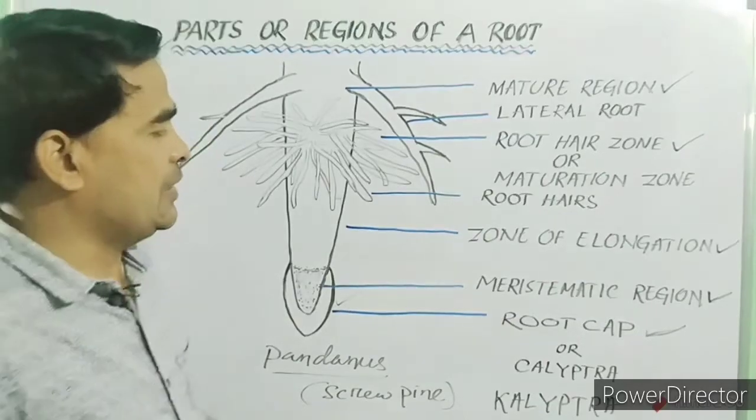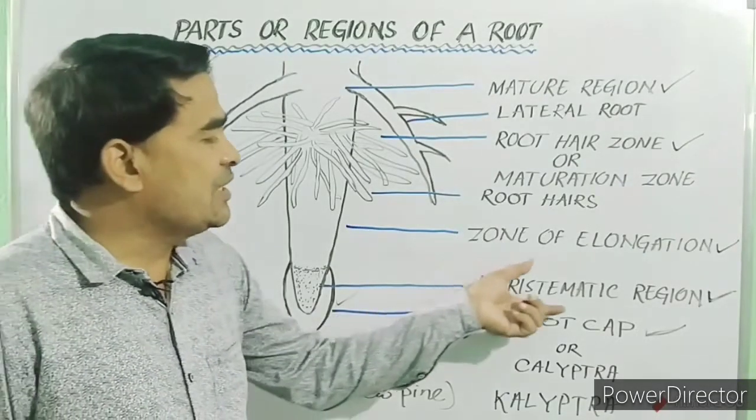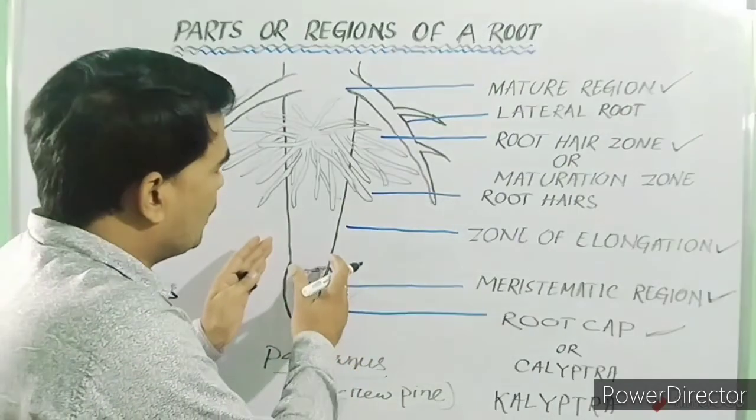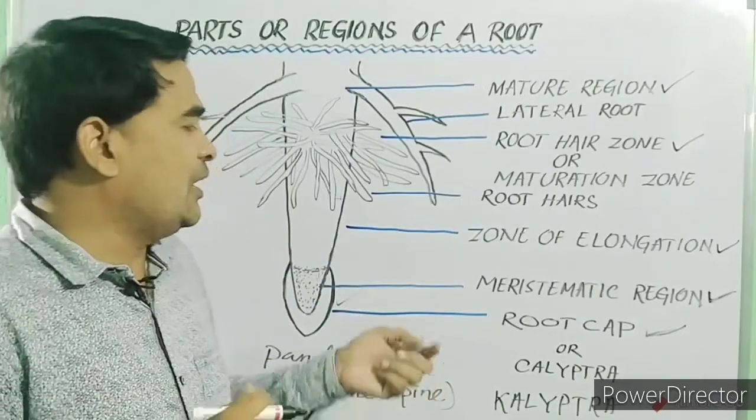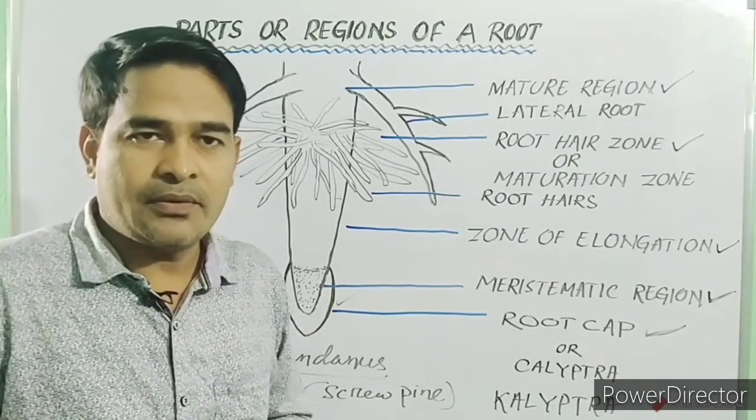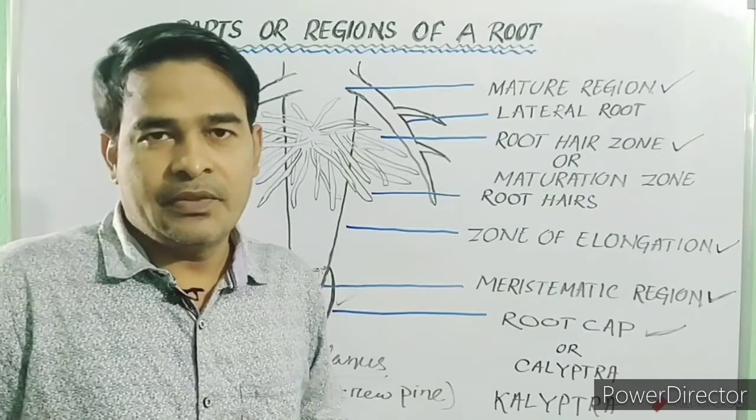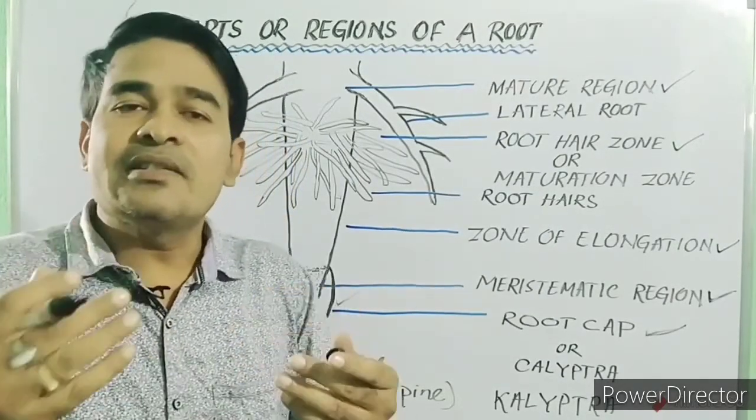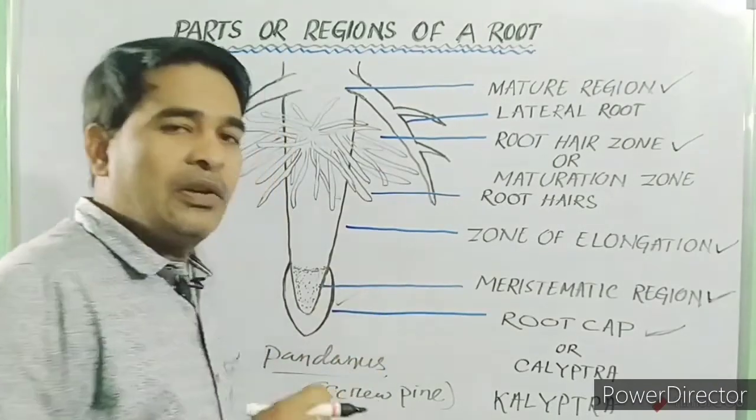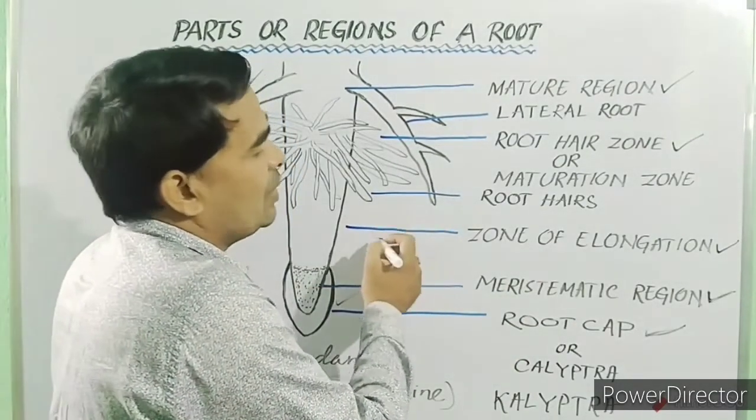Then we will study meristematic region. So, this meristematic region also called the growing tip or growing point of the root is covered by the root cap. So, in root, the growing point or apex is sub-terminal or sub-apical in position. The cells of this meristematic zone are meristematic cells which are thin-walled and with dense protoplasm. The function of this zone is to produce new cells which are added to the root cap as well as to the zone of elongation.